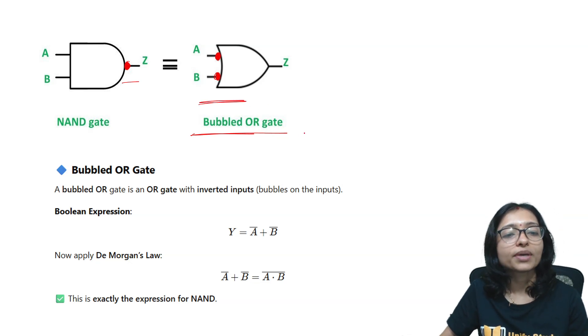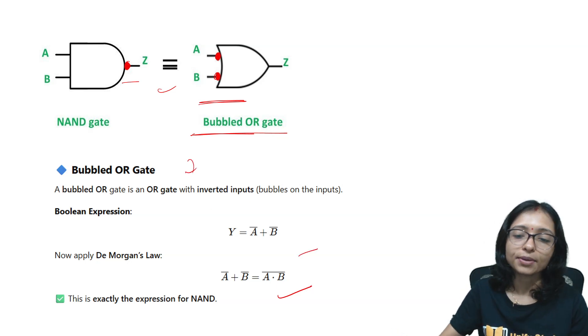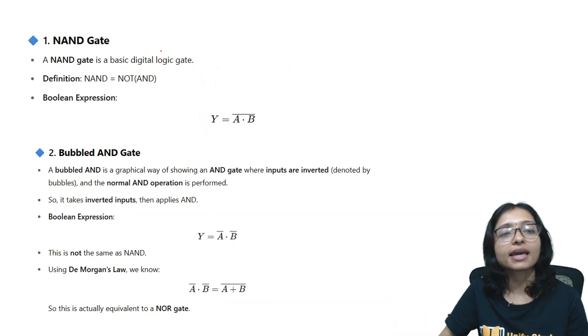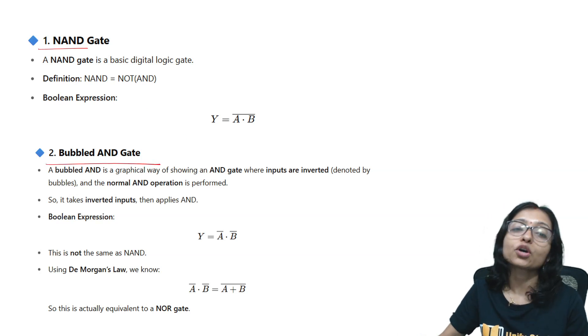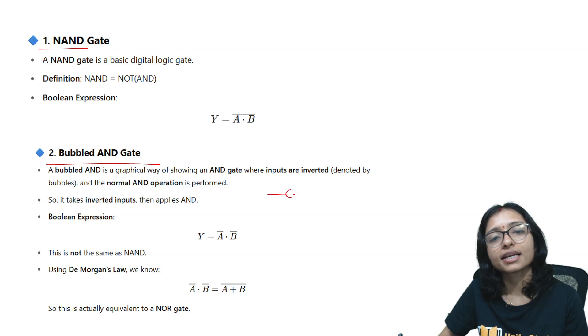So according to De Morgan's law we can say that yes NAND is equivalent to bubbled OR because using De Morgan's law it is coming. But we cannot say that NAND is equivalent to bubbled AND because we have to think bubbled AND means always it is telling like that input in AND.